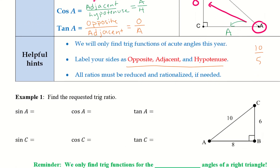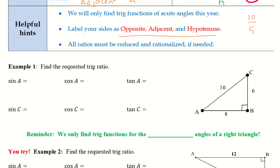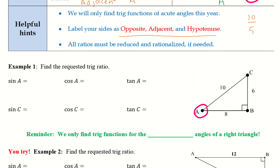Alright, example one — we want to find the requested trig ratios. We're dealing with angle A, so I need to know the opposite, adjacent, and hypotenuse. The hypotenuse will always be the hypotenuse. For sine of A — that's SOH, opposite over hypotenuse — I use opposite which is 6 and hypotenuse which is 10, giving me 6 over 10, simplified to 3 over 5.